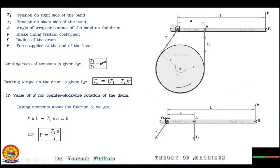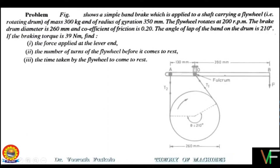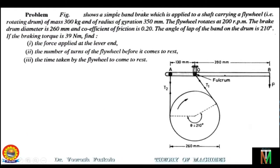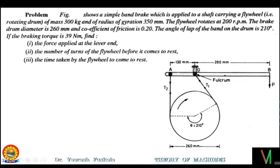The problem statement is as follows. The figure shows a simple band brake applied to a shaft carrying a flywheel — a rotating drum of mass 300 kg and radius of gyration 350 mm. The flywheel rotates at 200 rpm. The brake drum diameter is 260 mm and the coefficient of friction is 0.2. The angle of lap of the band on the drum is 210 degrees. If the braking torque is 39 Nm, find the force applied at the lever end, the number of turns of the flywheel before it comes to rest, and the time taken by the flywheel to come to rest.